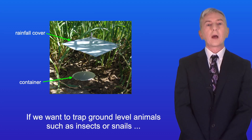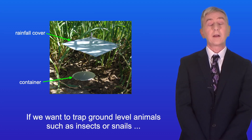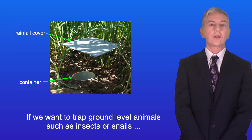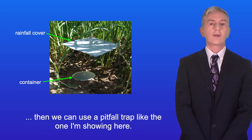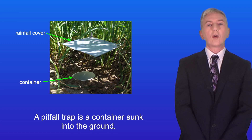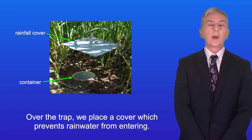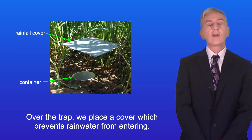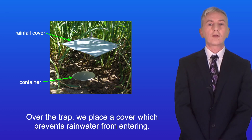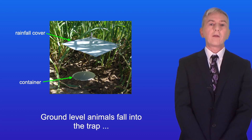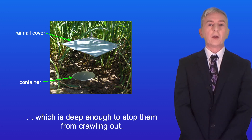If we want to trap ground level animals such as insects or snails then we can use a pitfall trap like the one I'm showing here. A pitfall trap is a container sunk into the ground. Over the trap we place a cover which prevents rain water from entering. Ground level animals fall into the trap which is deep enough to stop them from crawling out.